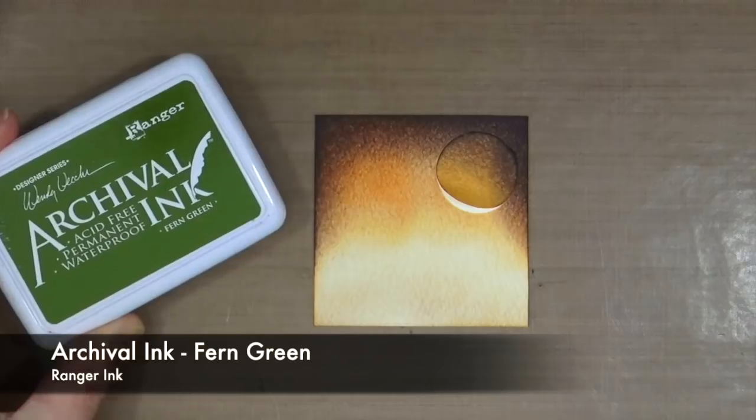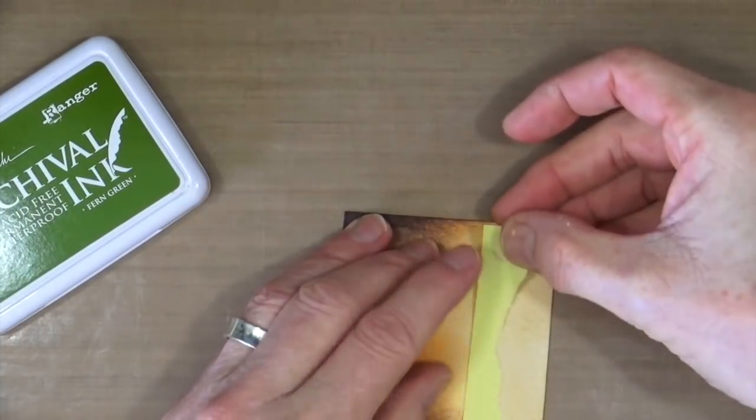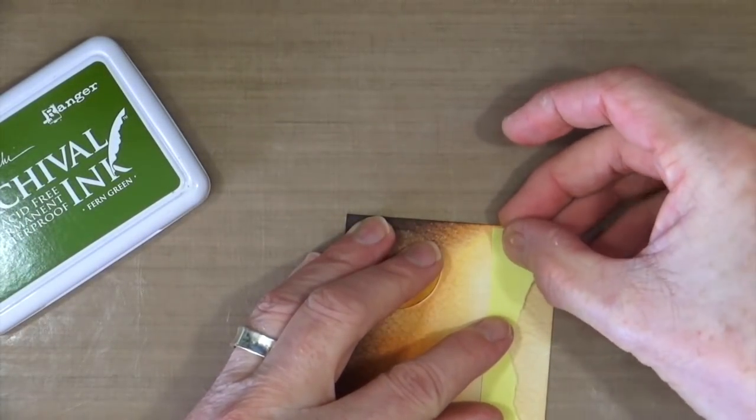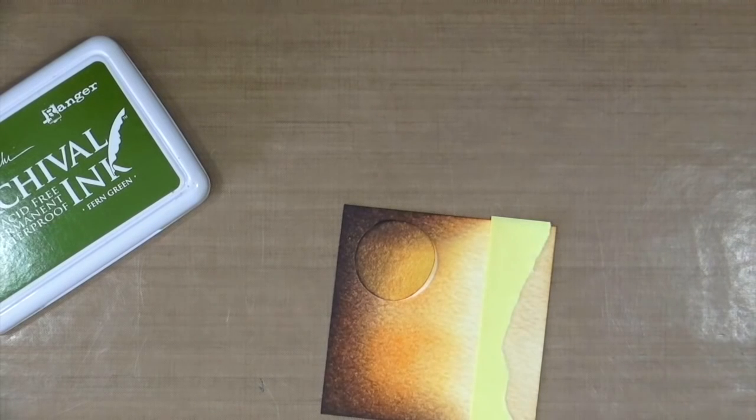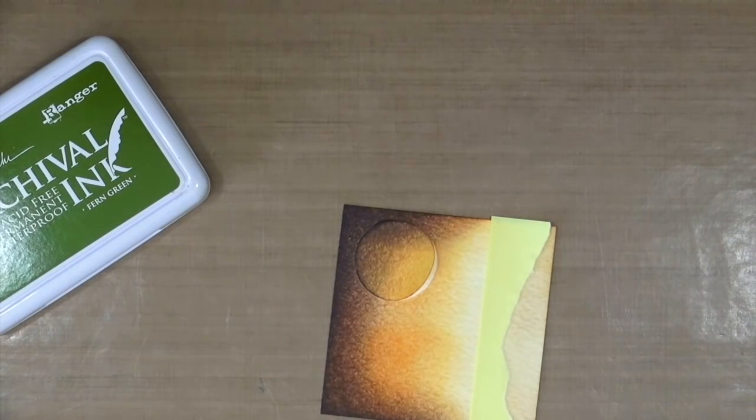So now we're all tidy, I'm going to bring out the fern green. I've already torn another piece of post-it note which I'm going to apply towards the bottom to create a mask that's going to give me a little bit of a landscape effect.